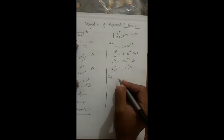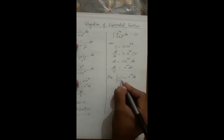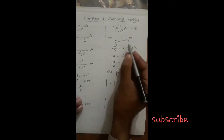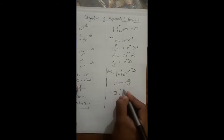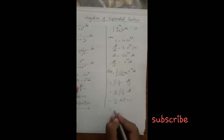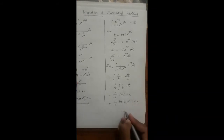Substituting into the integral: e^(4x) dx is replaced by dt/12, and (1 plus 3e^(4x)) is replaced by t. This gives (1/12) times the integral of 1/t dt, which equals (1/12) log of t plus c. Replacing t with its original value: (1/12) log(1 plus 3e^(4x)) plus c. This is the integration by substitution method.